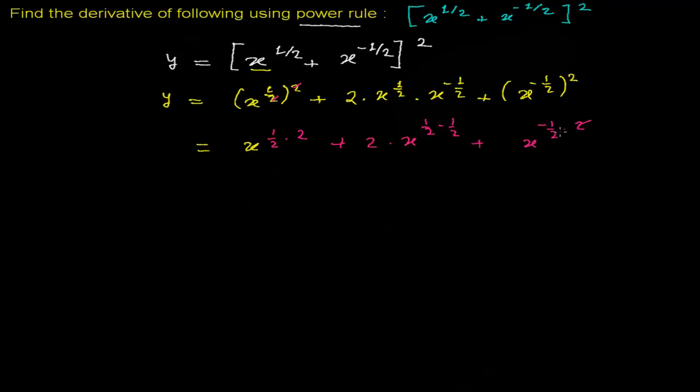Then plus x to the power minus 1/2 times 2. So this and this will cancel out, and we'll be left with x plus, this is like 1/2 minus 1/2, that is 2 times x to the power 0, which is going to be 1.